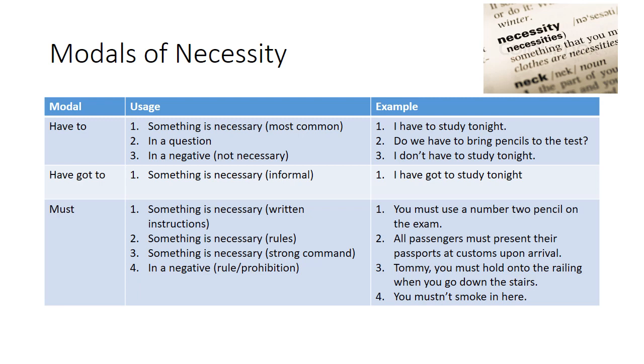Moving on to the next one we have have got to and we'll notice that with have got to we only have one usage and that usage is when something is necessary. This is the informal usage. Have to would be the more formal of the two. So we can say the same thing I have got to study tonight but we don't use it in a question and we don't use it in a negative. So it's just used in affirmative sentences in an informal manner. If it makes it easier for you in terms of usage for yourself you can just avoid using have got to. You just know that when you hear it or when you read it that it means the same thing as have to.